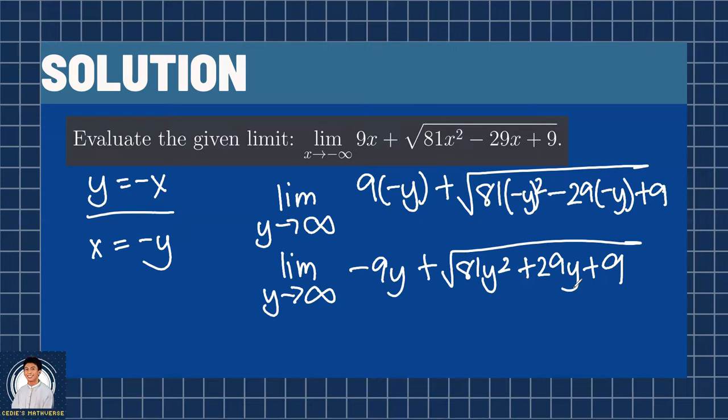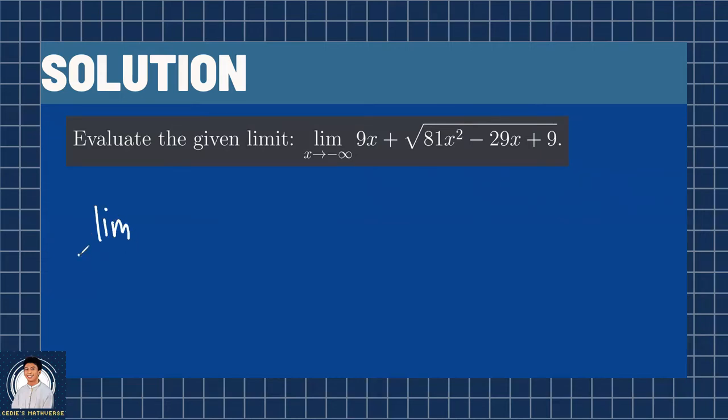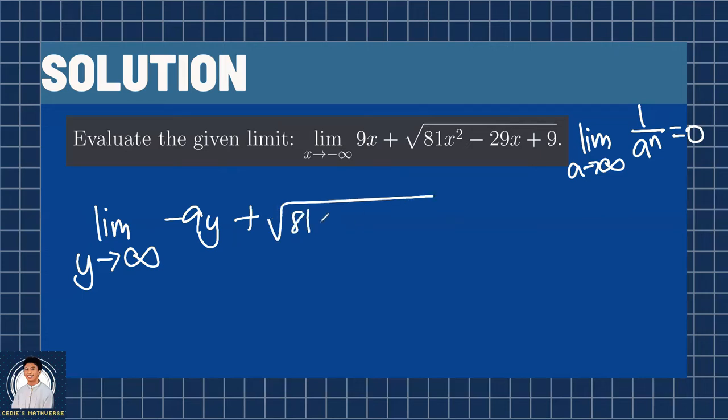Now we're almost through. The next step that we will do for this limit is to use the limits for infinity. Remember that the limit as a approaches infinity, positive infinity, of 1 over a raised to the nth power is equal to 0. To use this or utilize this from this limit expression, we need to multiply the conjugate of this expression.